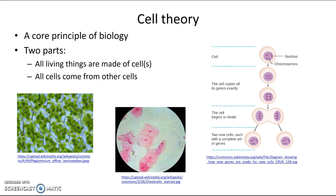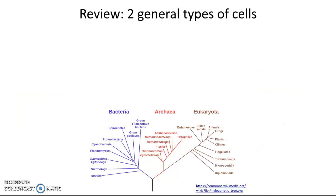As you'll remember from chapter one, we can divide life on earth into different groups depending on the characteristics of their cells. Let's revisit that for a moment to review. In chapter one, you learned about the two general types of cells: prokaryotic cells and eukaryotic cells.